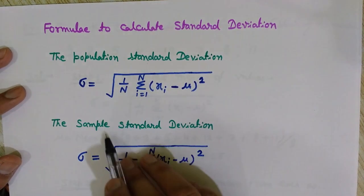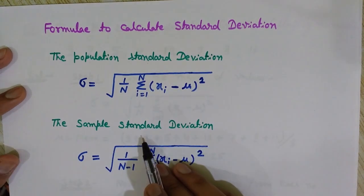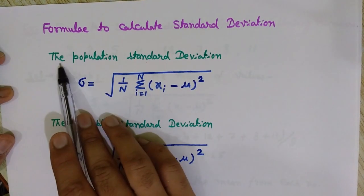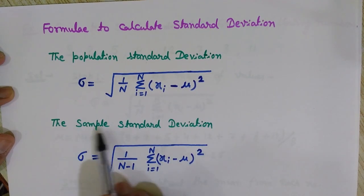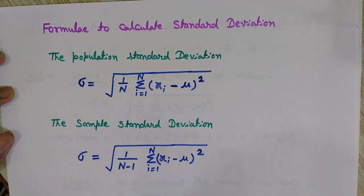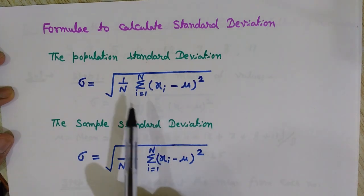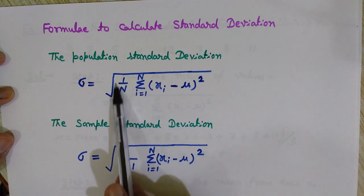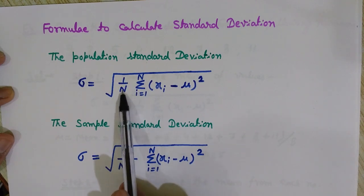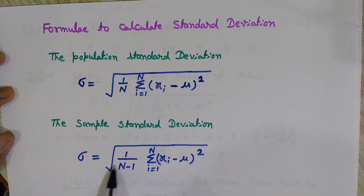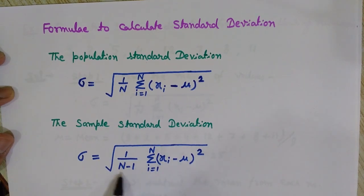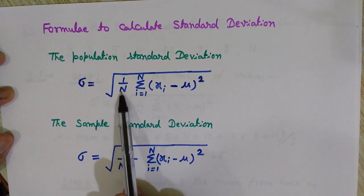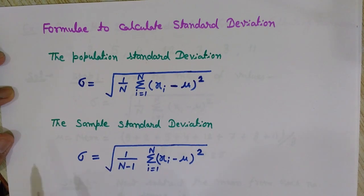There are two variations in this formula. The first formula is the population standard deviation and the second one is the sample standard deviation. You can see there is a small difference between these formulas: here it is 1 by n, but at this place it is 1 by n minus 1. The difference is only this minus 1 — in one formula it is n, in the other it is n minus 1.